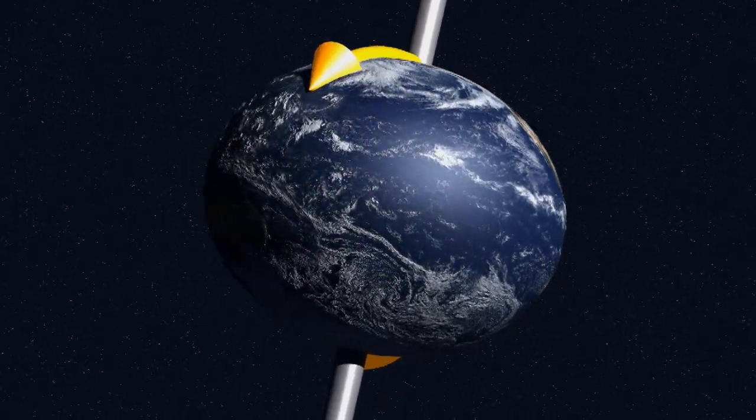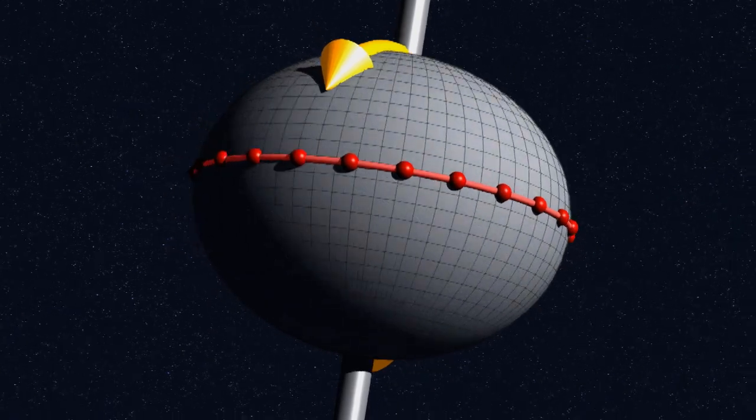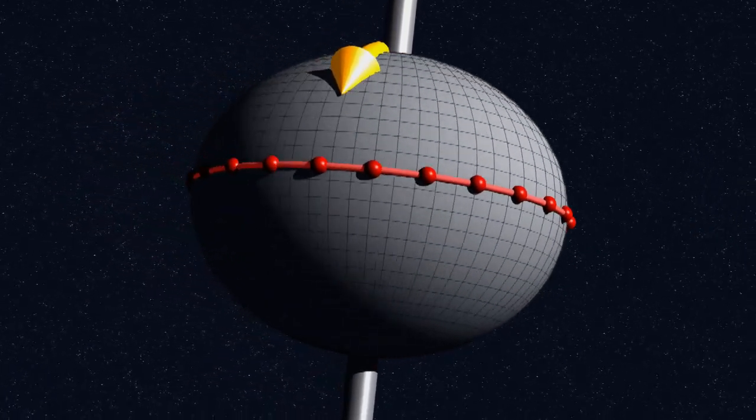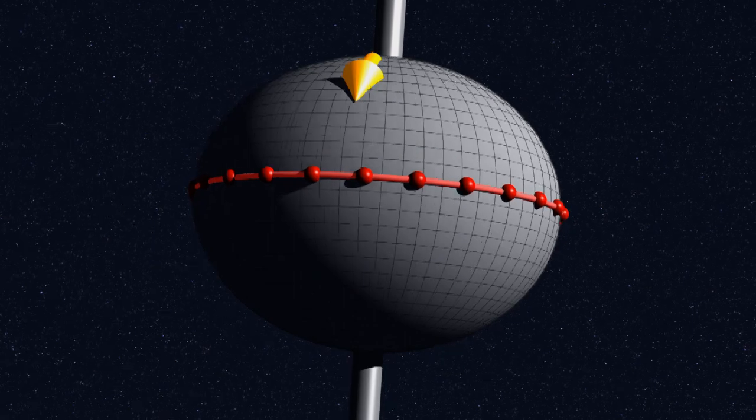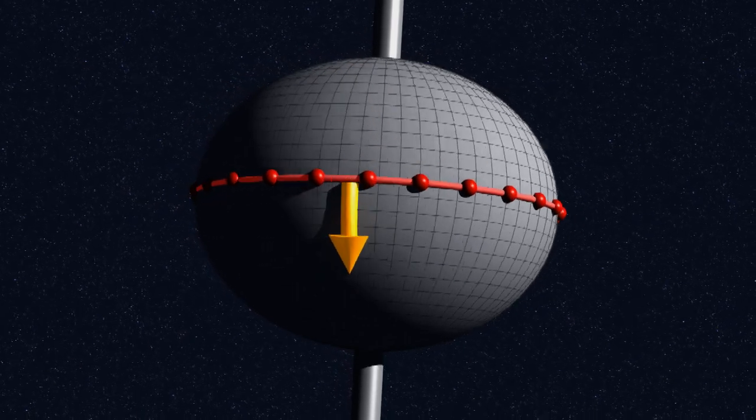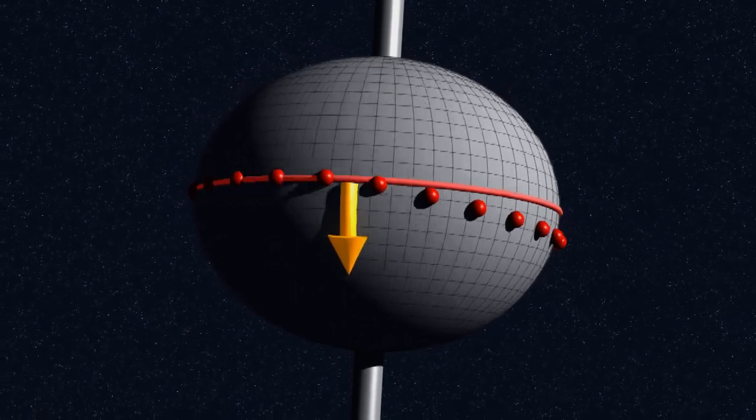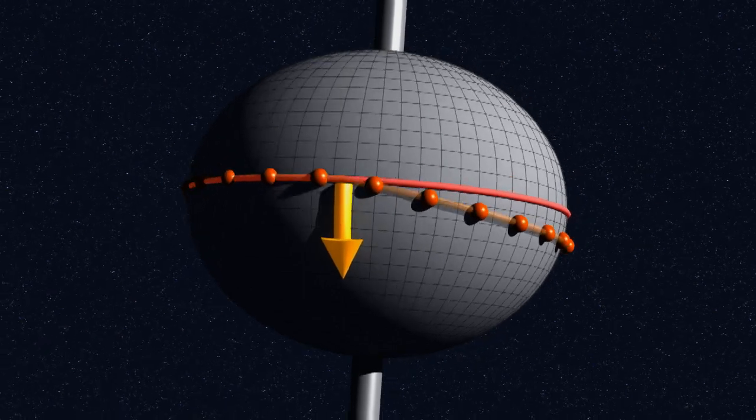Let's imagine the earth as a set of individual particles that are revolving around the earth's axis. Now, let's apply that rotational force. This force deflects the particles, pushing them downwards.